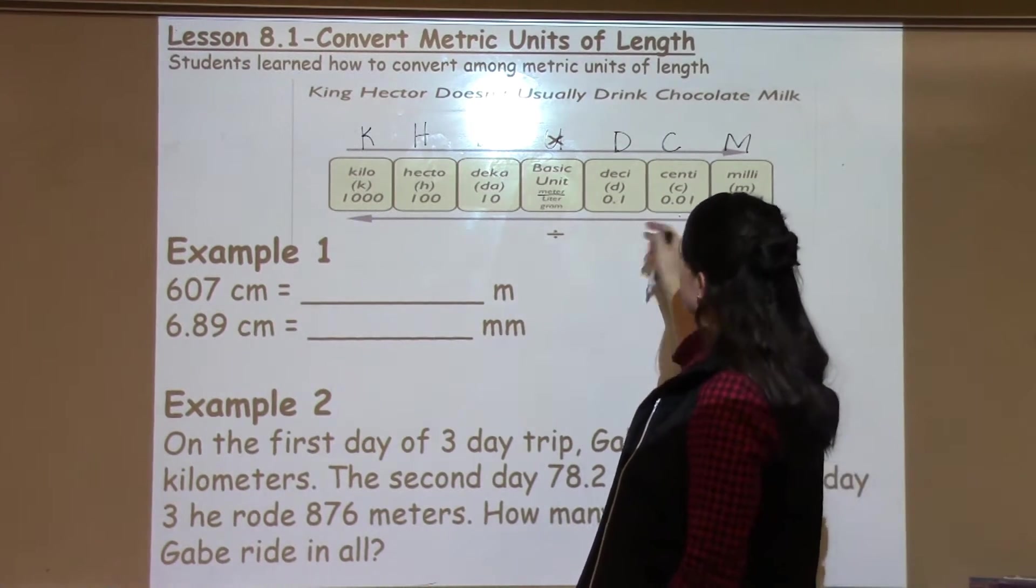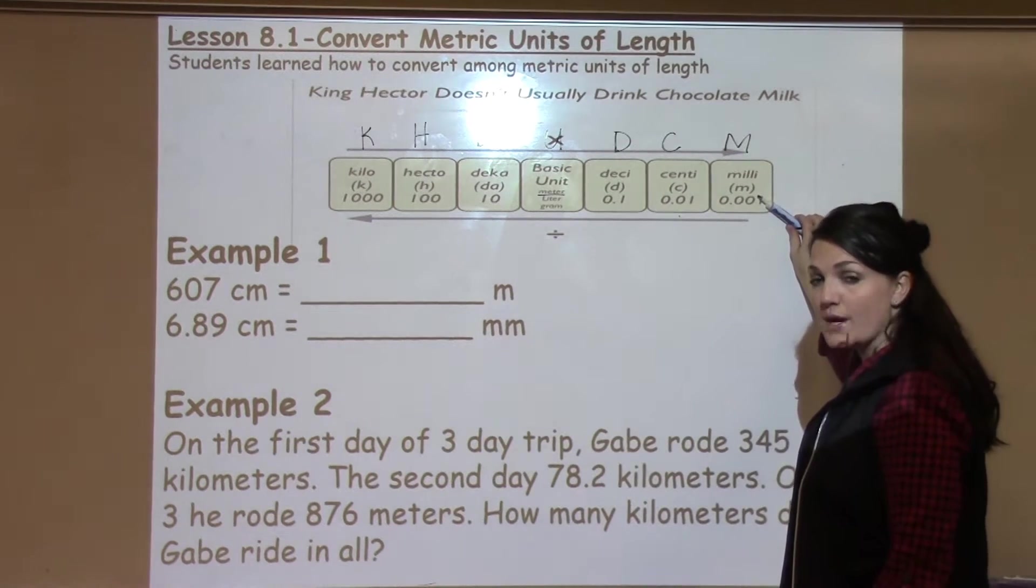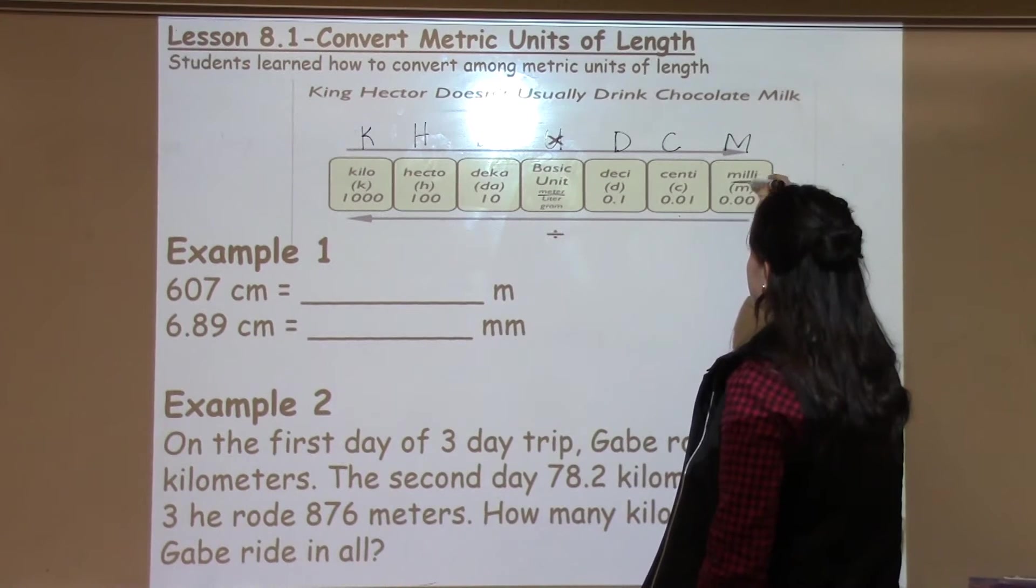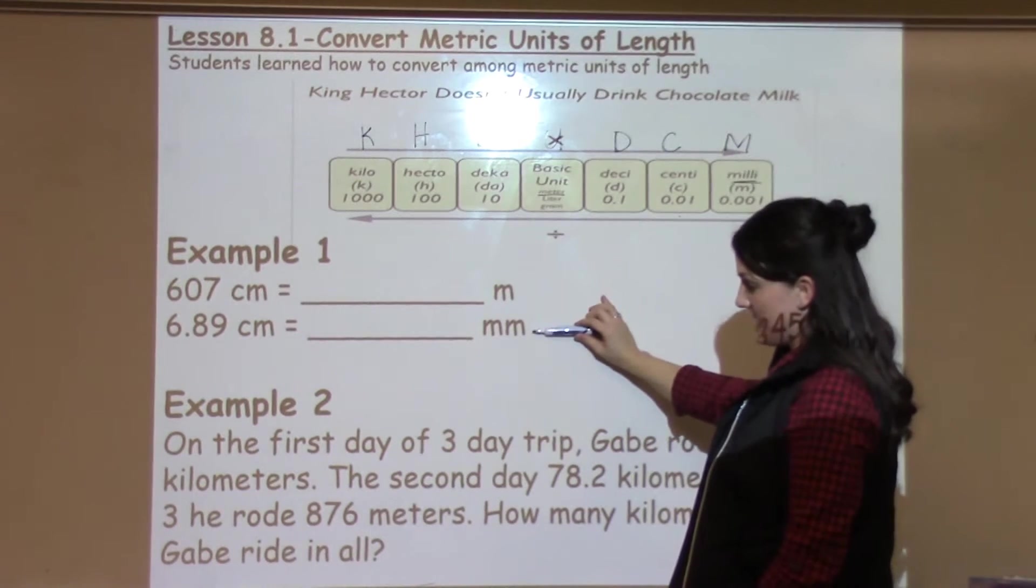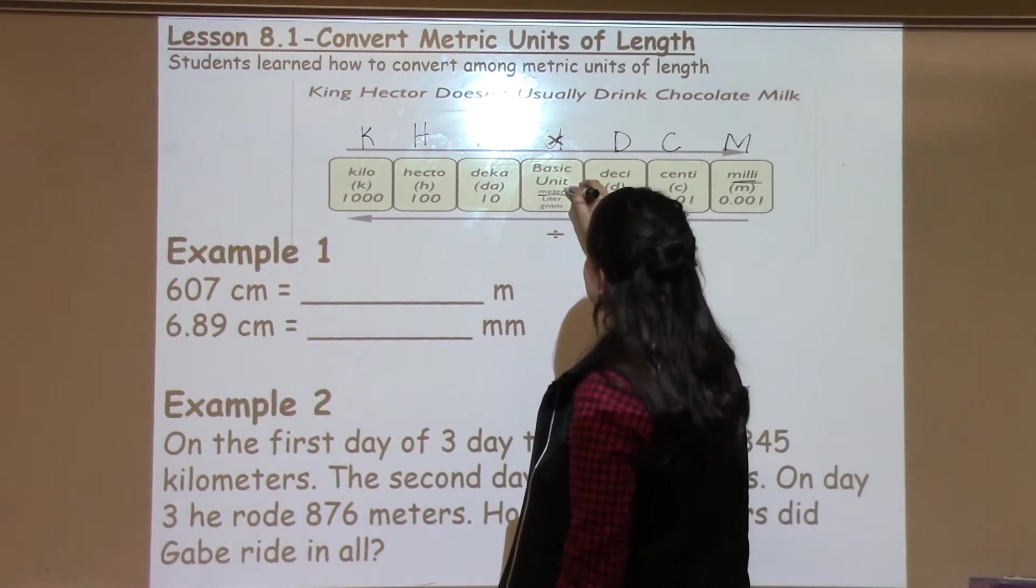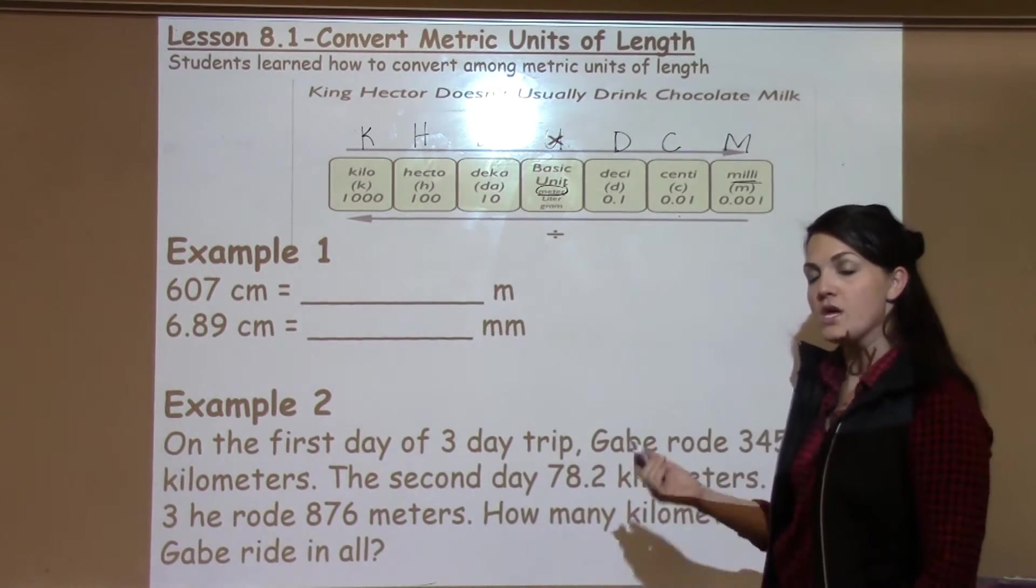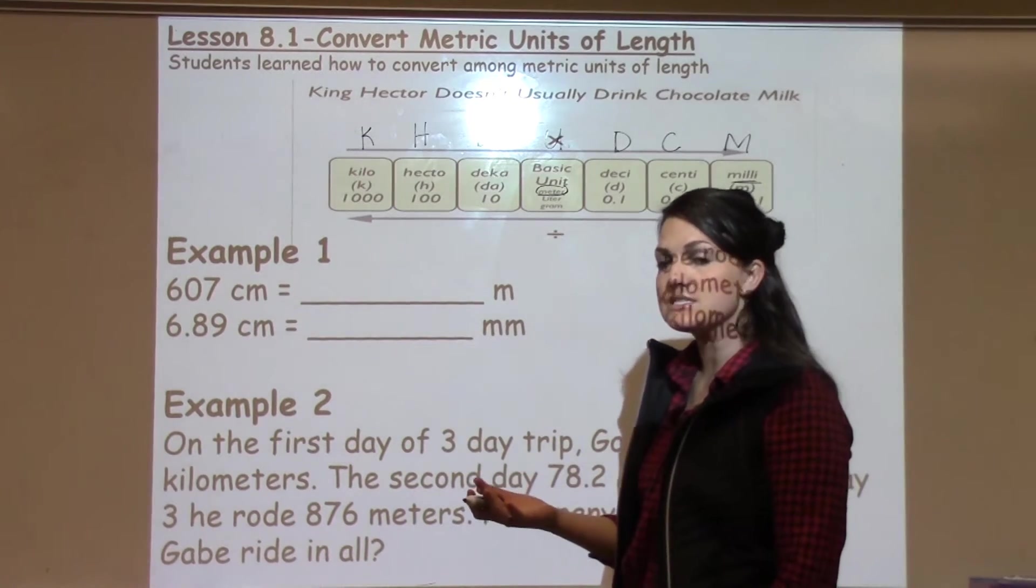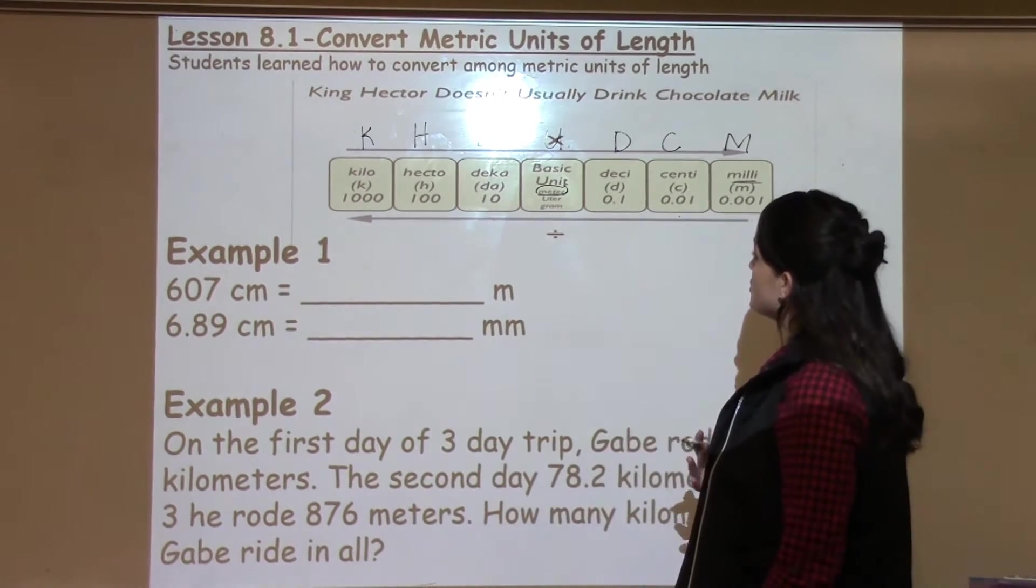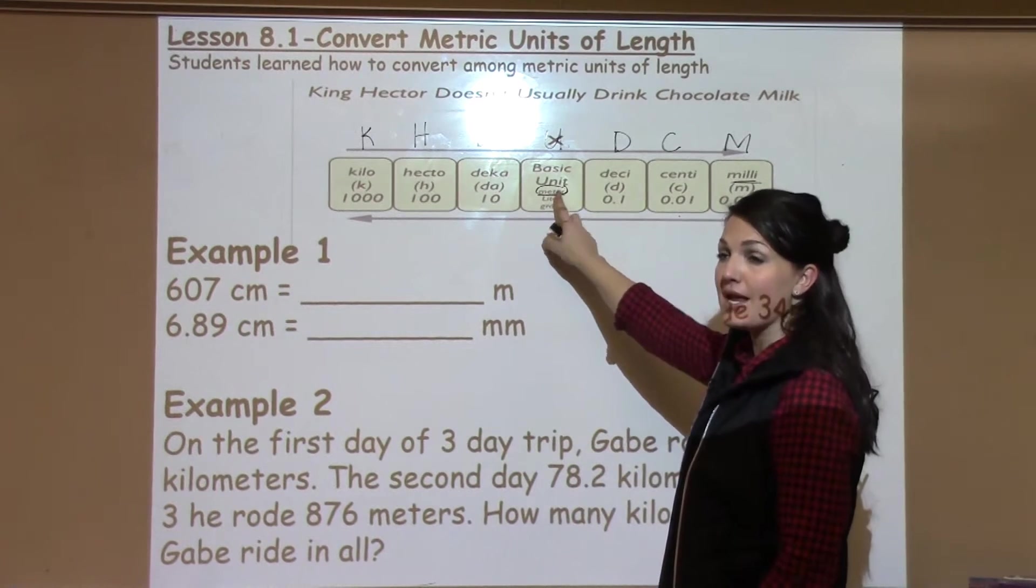Now notice meters, students sometimes get confused and think that they should move this direction, but this is for millimeters which has two m's. If it just has one m, that is the basic unit, which is actually our u. So sometimes that takes a little bit of practice and reminding to help students remember that if it's just one m, they're looking for that basic unit, just the meter.